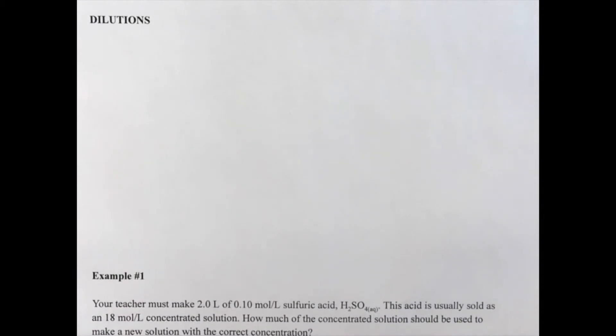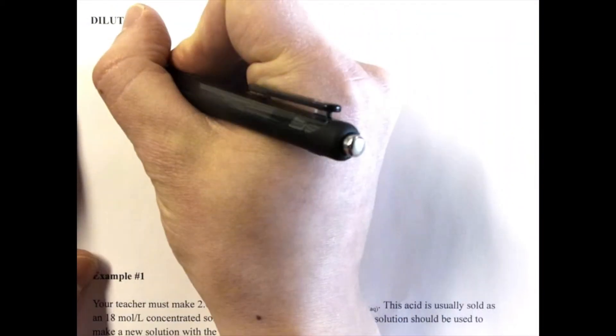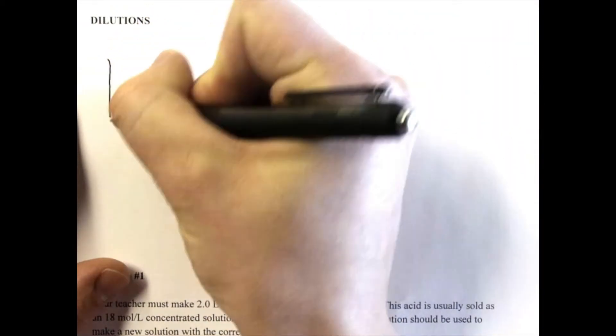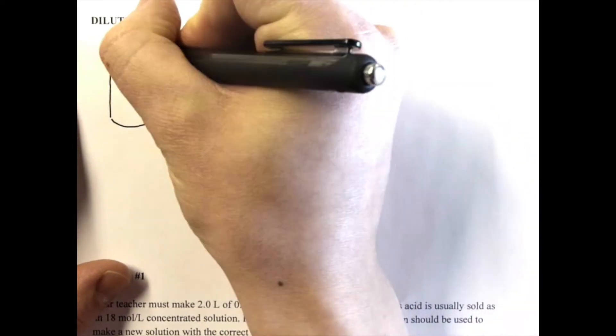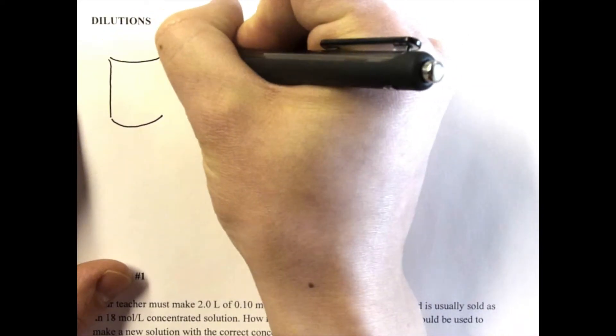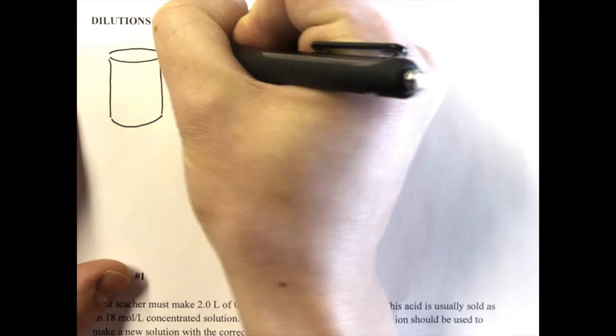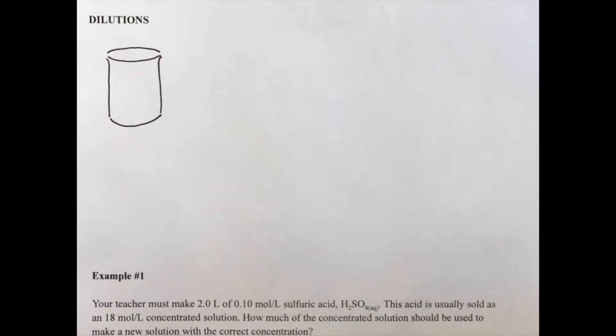Now before we do an example, what we're going to do is look at the thinking behind what happens when we dilute a solution. What does it mean to dilute something? Well when we dilute something, we're trying to make it a little bit less concentrated. We're trying to make the solute a little bit less concentrated.